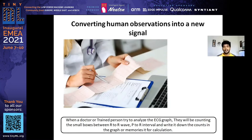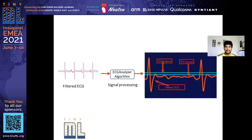Based on that observation, doctors could determine whether there was atrial fibrillation or AV block one. I converted that human observation into a new signal — the data was already hidden inside the ECG data itself. I used the ECG Analyzer algorithm from the ECG Analyzer library, which takes filtered ECG as input, performs signal processing, and splits the data into three different streams: filtered ECG, R interval, and PR interval. This approach increased my model accuracy.